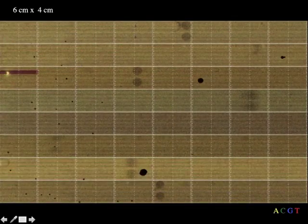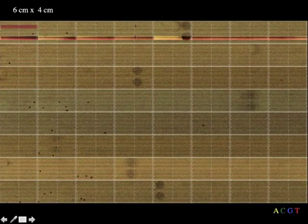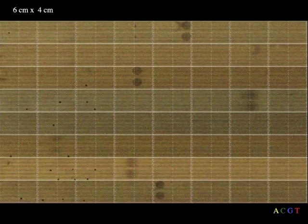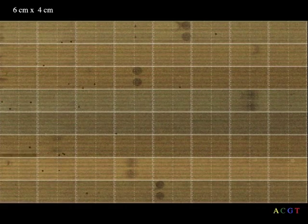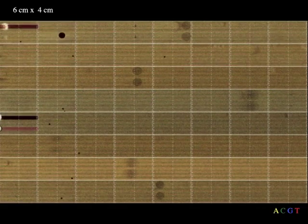At full capacity, HiSeq machines can image 170 million clusters on each of 16 lanes. This reveals the base sequence for up to 2 billion snippets of 300 bases each.